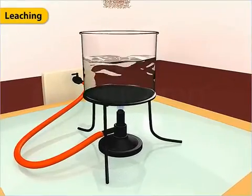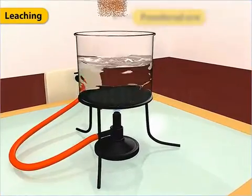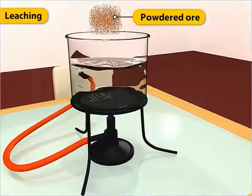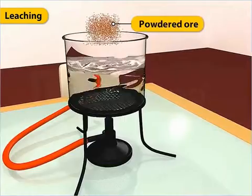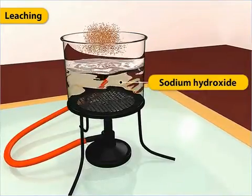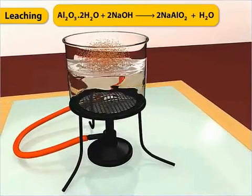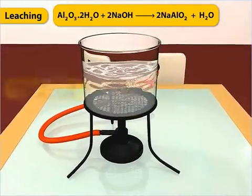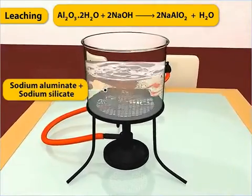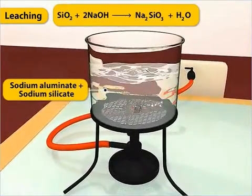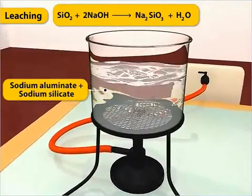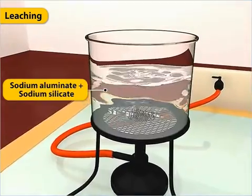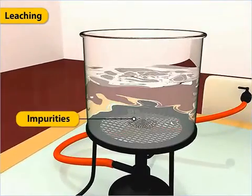In the leaching method, the powdered bauxite ore is treated with a hot and concentrated solution of sodium hydroxide. The ore dissolves in sodium hydroxide to form sodium aluminate, and silica dissolves to form sodium silicate. The other impurities, however, remain undissolved and are later filtered out.